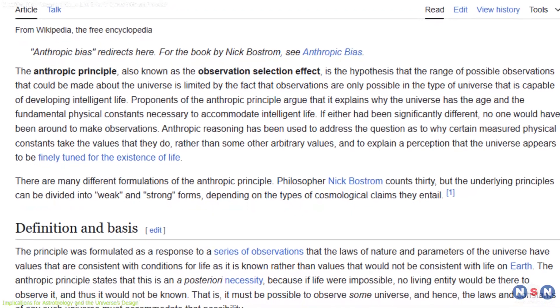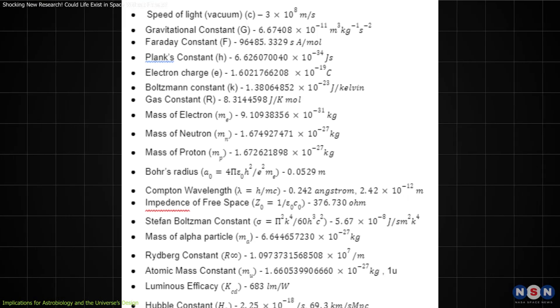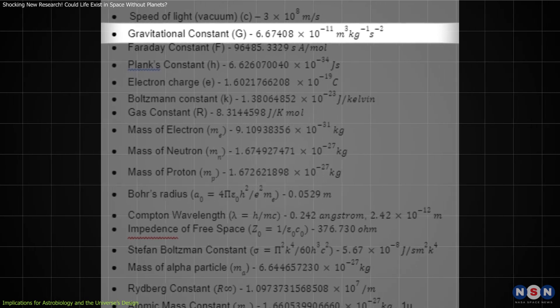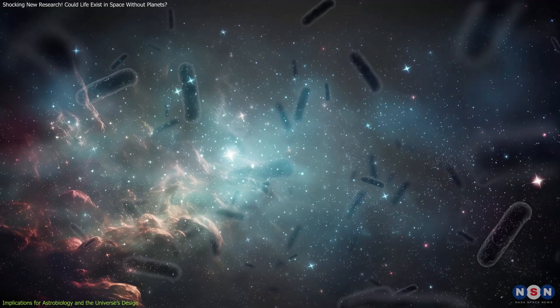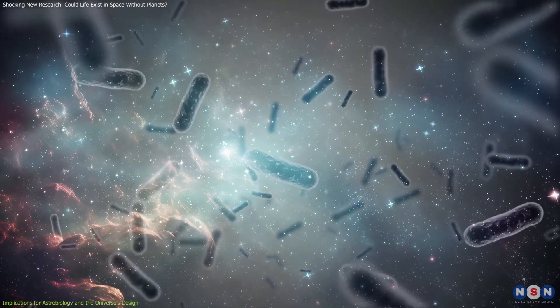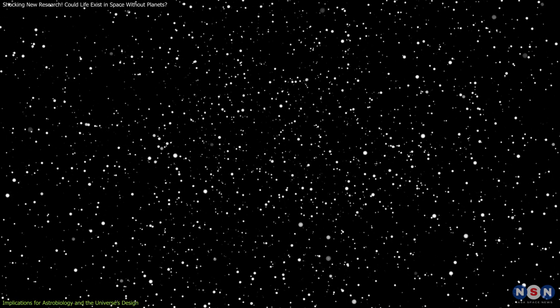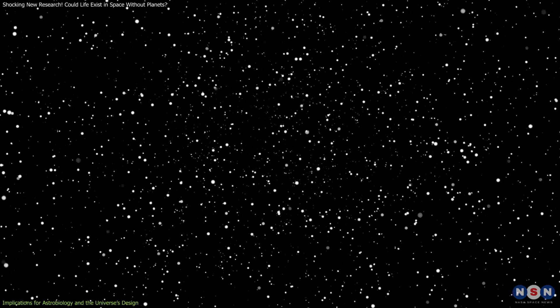Studies testing the anthropic principle examine whether the universe's constants, like the gravitational constant, are fine-tuned for life. If life can generate its own habitable conditions, the universe's capacity to support life might be even broader than previously thought.